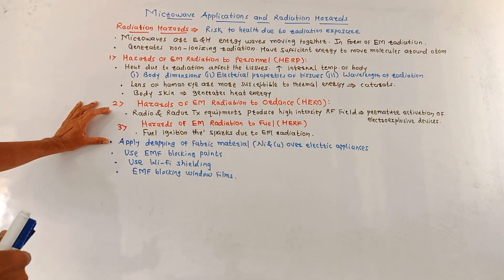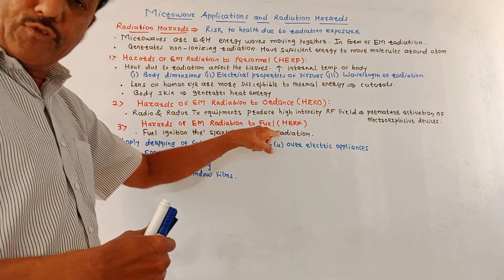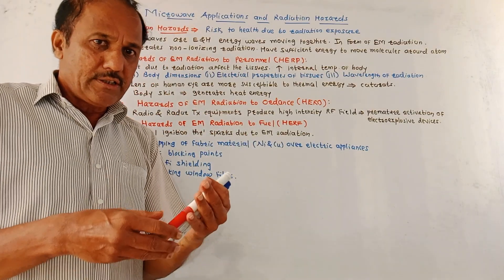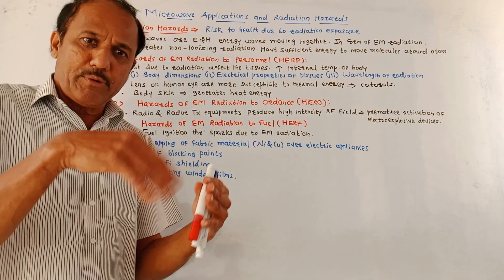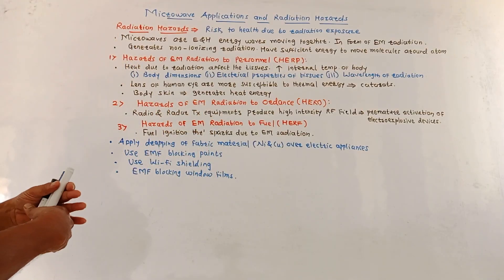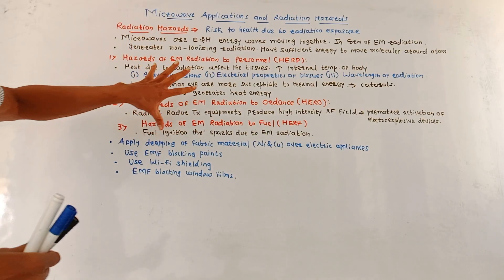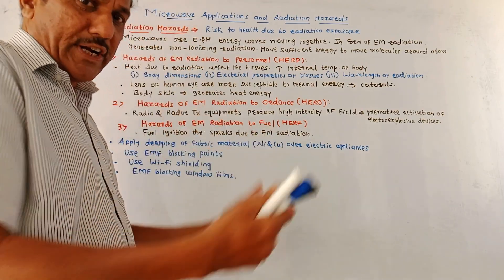Third type is hazards of EM radiation to fuel. It may happen that because of the electromagnetic radiation, sparking takes place and because of which ignition will take place. These are some effects as far as microwave radiation is concerned.